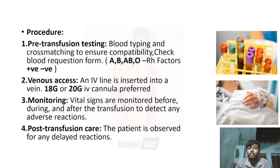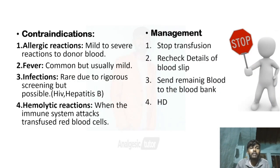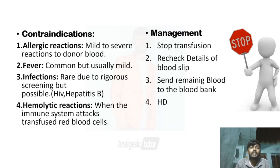Adverse reactions include allergic reactions, fever, infections, and hemolytic reactions. Allergic reactions range from mild to severe and are reactions to donor blood. Fever is commonly seen but is usually mild. Infections are rare, but without rigorous screening there is a possibility of spreading infections like HIV or hepatitis B. Hemolytic reactions occur when the immune system attacks the transfused RBCs and may be severe or acute.